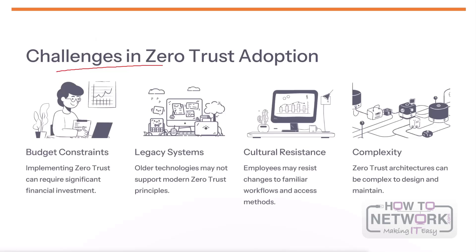Challenges in zero trust adoption include several key barriers. Budget constraints can make it difficult to invest in the necessary infrastructure and tools. Legacy systems that don't support modern security protocols can hinder the transition to a zero trust architecture. Employees may resist changes to familiar workflows and access methods, creating cultural resistance. The complexity of designing and maintaining a comprehensive zero trust system can also be a significant barrier. Overcoming these challenges requires careful planning, stakeholder buy-in, and a phased approach to implementation.